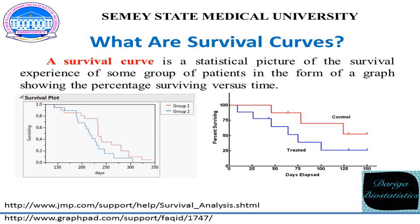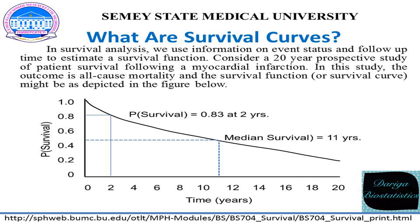A survival curve is a statistical picture of the survival experience of some group of patients, in the form of a graph showing the percentage surviving versus time. The best known way to estimate your prognosis is to compare it to the experience of other patients in a similar situation treated similarly, as represented by a survival curve. Survival curves are found in technical medical papers, and understanding them is essential, though they have important limitations and are easily misinterpreted, often in the direction of underestimating hope.